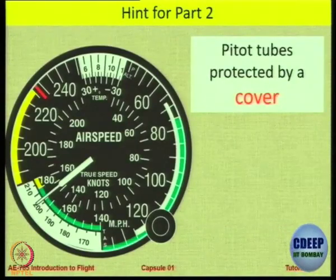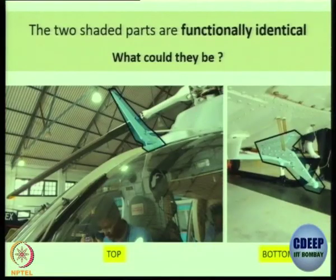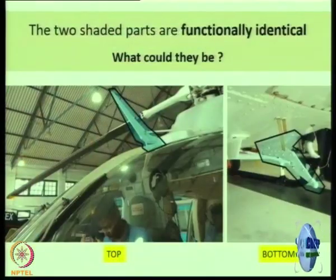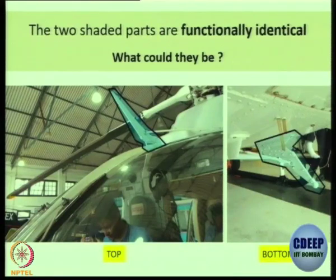The second part is a Pitot tube cover. We know it is a Pitot tube because we saw static ports mounted on the side of the fuselage. There are two parts which have been sketched. Now this is a bonus question — I must tell you that even I had no idea what these parts are, with so many years of experience in aviation. Can the students try to guess what these two jutting parts are — one below and one above the helicopter?